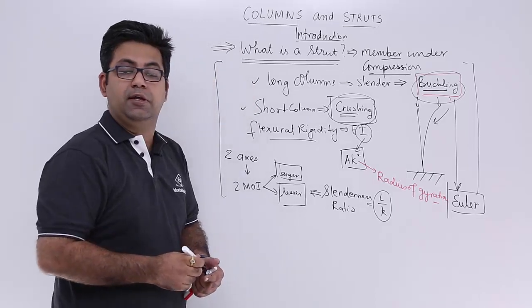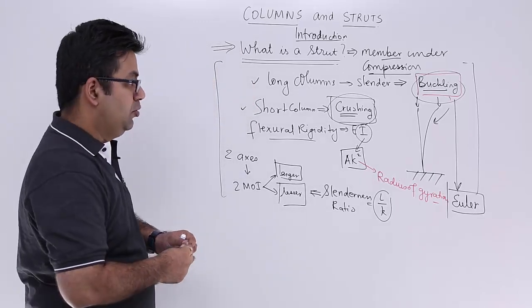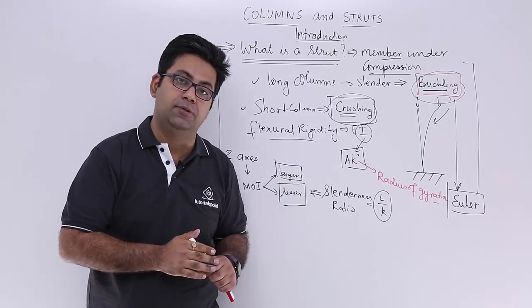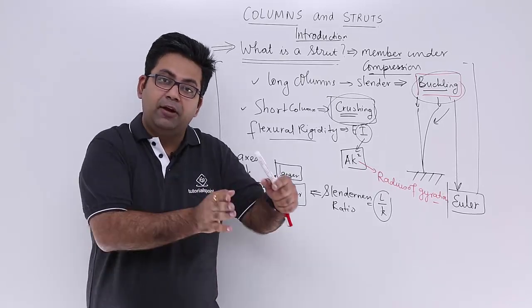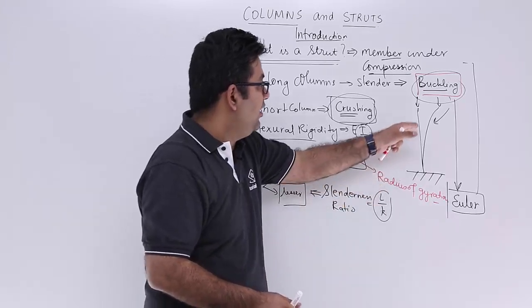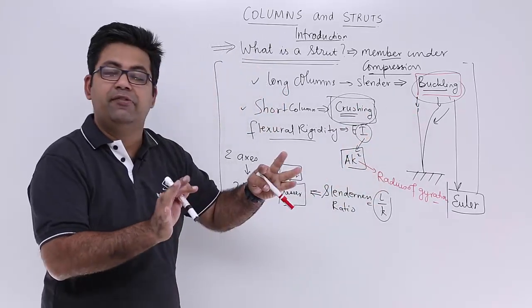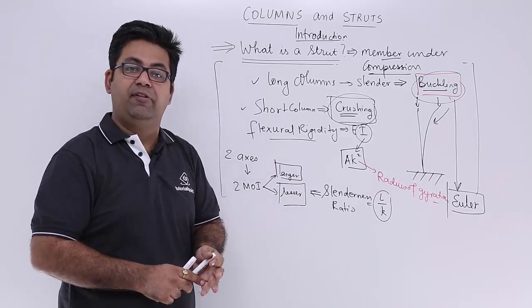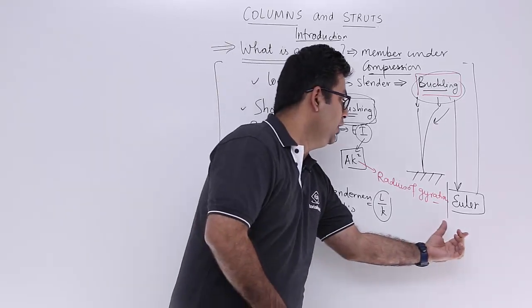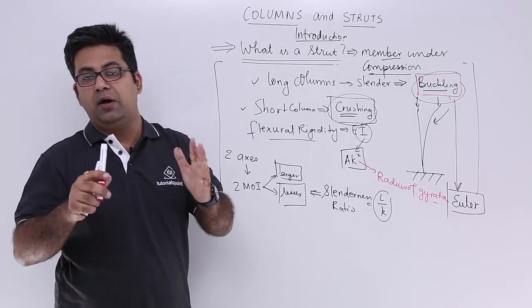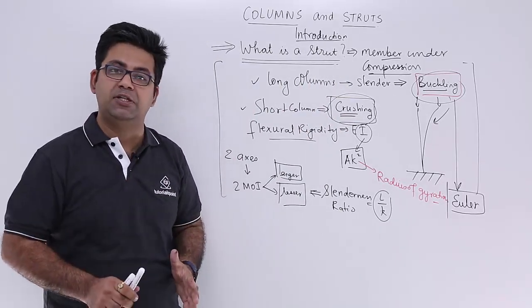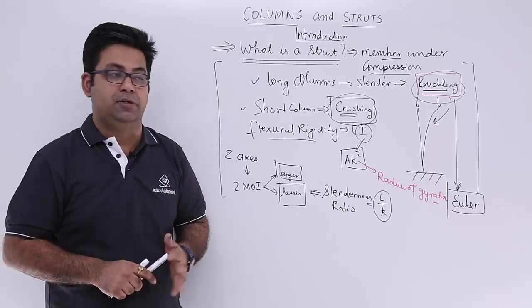In the next video onwards, we will look at some end conditions of these columns. For every kind of end condition, you will have a different value of buckling load depending on that end condition, which will be derived with the help of the Euler theory. So now let's move on to the next video.